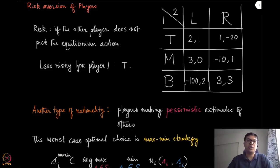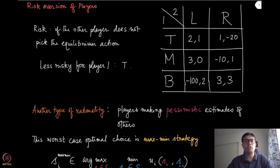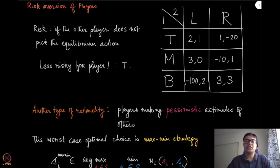While discussing Nash equilibrium, we made a very crucial assumption that all the players are rational and intelligent. Rationality means they are always trying to maximize their own utilities, and intelligence means they understand the rules of the game and will always pick the most optimal thing like a game theorist. In a game where Nash equilibrium exists, a rational and intelligent player will always find it and play according to that Nash equilibrium.